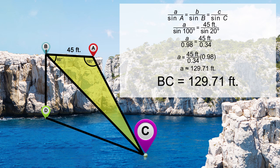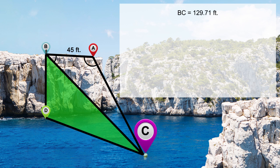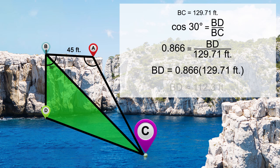You have not yet got the height of the cliff. You are halfway through though. Triangle BDC is a right triangle. Since the ocean is perpendicular to the cliff, you can use cosine 30 degrees to find the height BD. The cliff is 112.3 feet high. Should he attempt to jump?